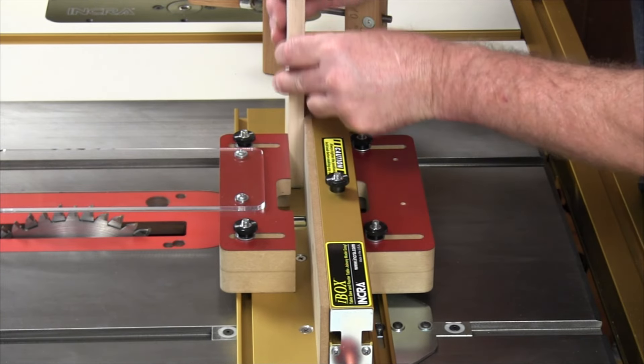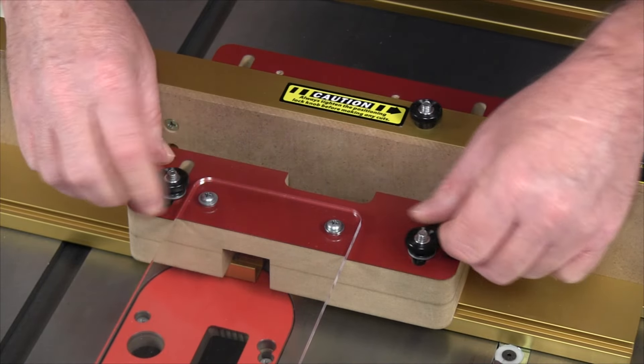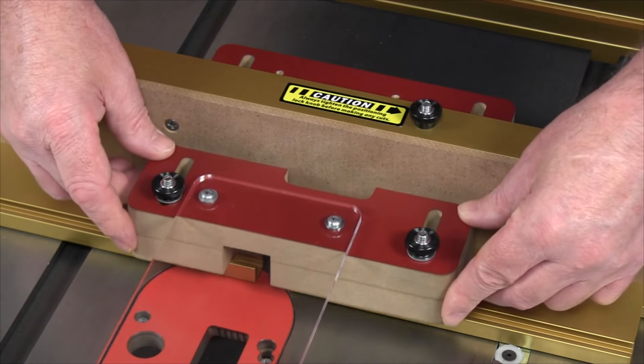The front guard doubles as a vertical stock support and is adjustable to provide support for material thicknesses from one-eighth to one and a quarter.